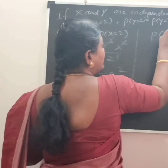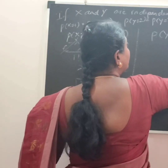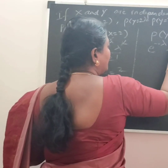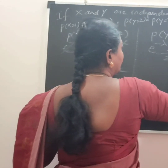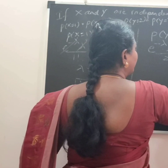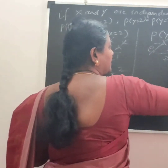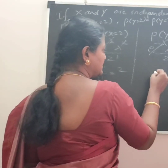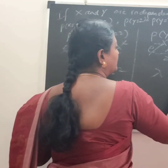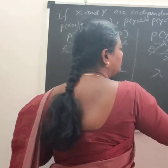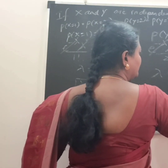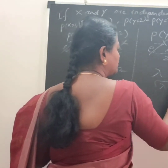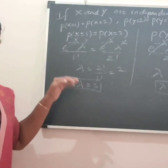For Y, using P(Y=2) = P(Y=3): e to the power minus lambda times lambda squared divided by 2 factorial equals e to the power minus lambda times lambda cubed divided by 3 factorial. After cancellation, lambda equals 3 factorial divided by 2 factorial, which equals 3. Therefore lambda_y equals 3, meaning the mean of Y is 3.